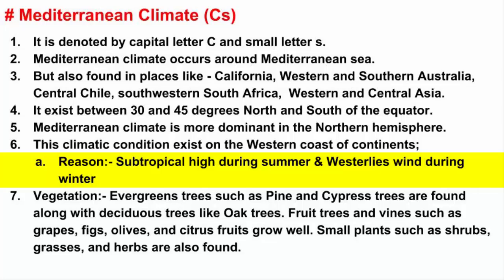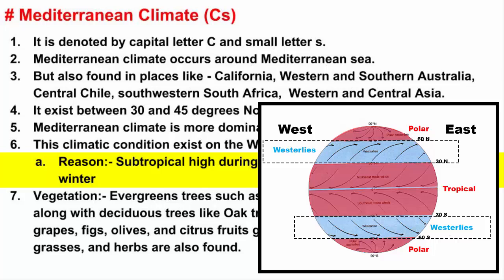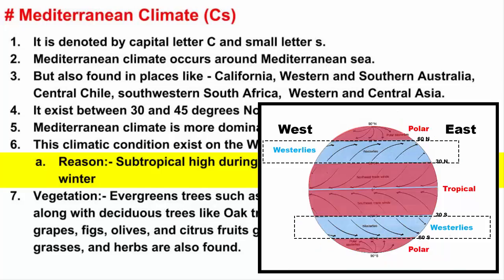During winter, Mediterranean climate exists due to westerly winds. Westerly winds are strong winds found in the middle latitudes, generally blowing between 30 and 60 degrees latitude in both the Northern and Southern Hemispheres. These winds are noticeable at higher altitude. They originate from the high pressure areas in the subtropical high region and move towards the poles, from west to east.